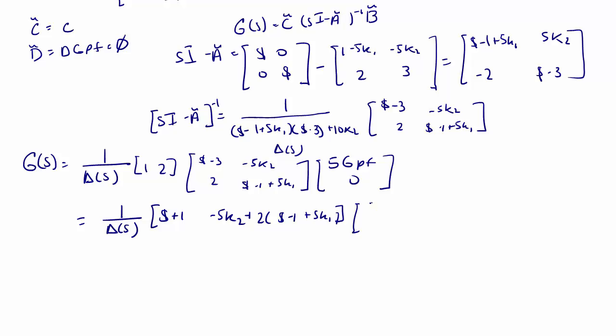And finally, we get the transfer function. The transfer function is 5 gpf times [s plus 1 minus 5k2 plus 2 times (s minus 1 plus 5k1)].